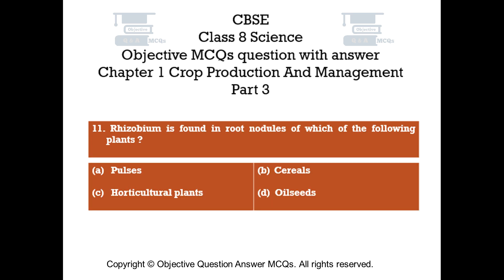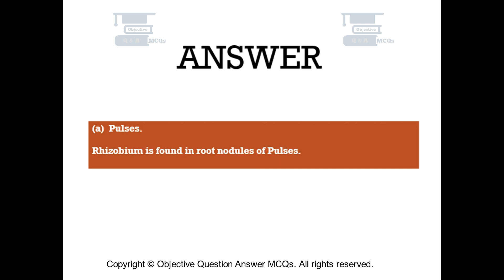Question number 11. Rhizobium is found in root nodules of which of the following plants? Option A: Pulses. Option B: Cereals. Option C: Horticultural plants. Option D: Oil seeds. The right answer is option A — Pulses. Rhizobium is found in root nodules of pulses.